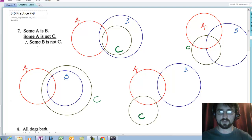All right, this is Ken Rosever. We're continuing with our Euler diagram practice, and here is number seven.